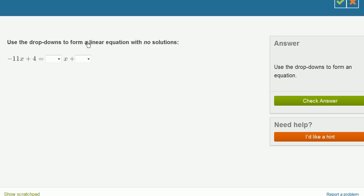We're asked to use the dropdowns to form a linear equation with no solutions. So an equation with no solutions is going to be one where, I don't care how you manipulate it, the thing on the left can never be equal to the thing on the right. And so let's see what options they give us.